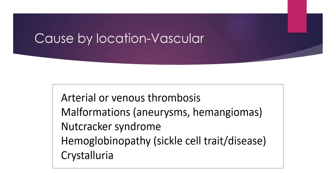For vascular causes, vasculitis falls under systemic diseases. Blood within the vessel can thrombose. There can be a hemoglobinopathy, or the vessel itself can be compressed — as in nutcracker syndrome, where the left renal vein gets compressed between the aorta and the superior mesenteric artery.